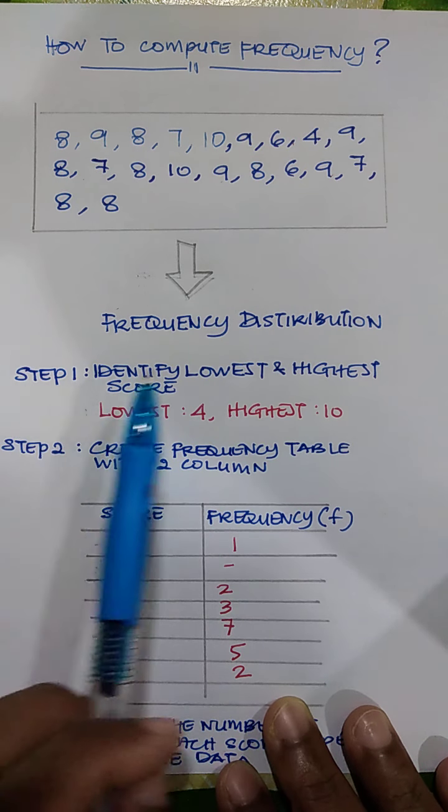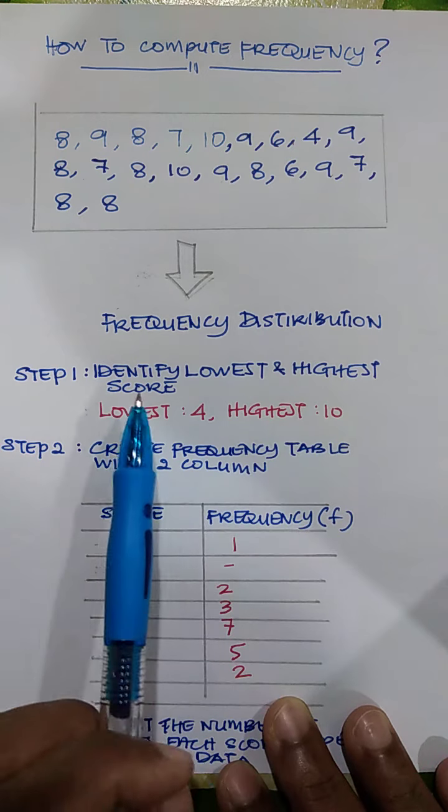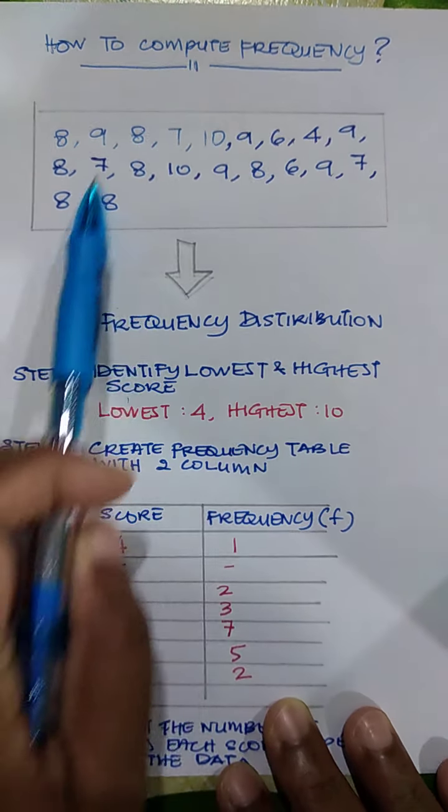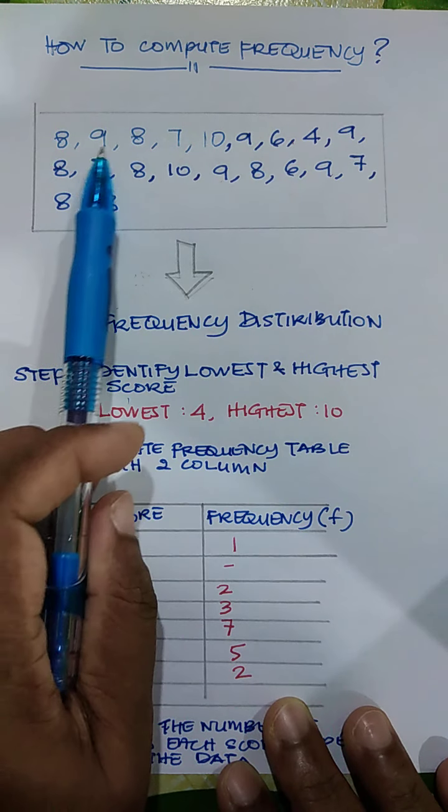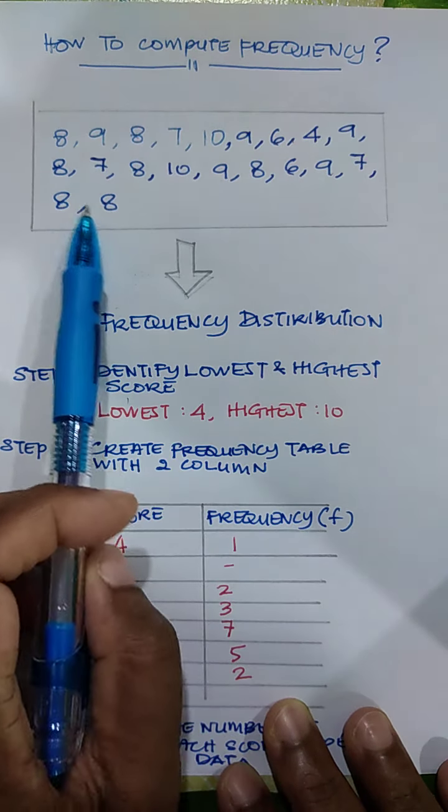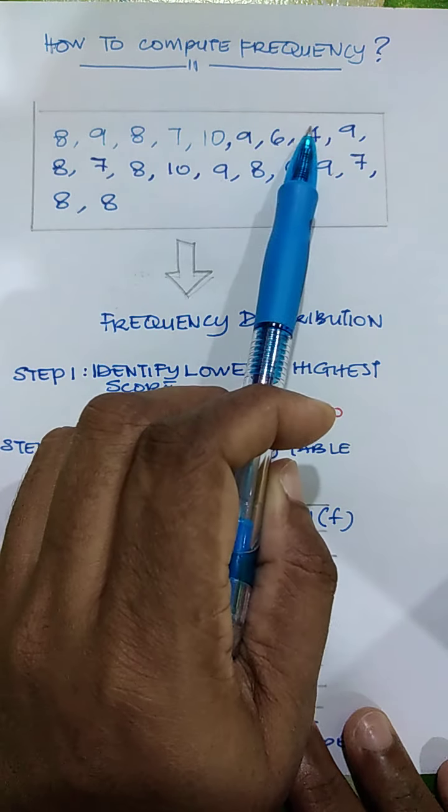table? Step one is to identify the lowest and highest score in your data that you have received. So from the data that you have, what is the lowest score? If you notice, the lowest score is 4. What is the highest score that you have? You notice the highest score is 10.